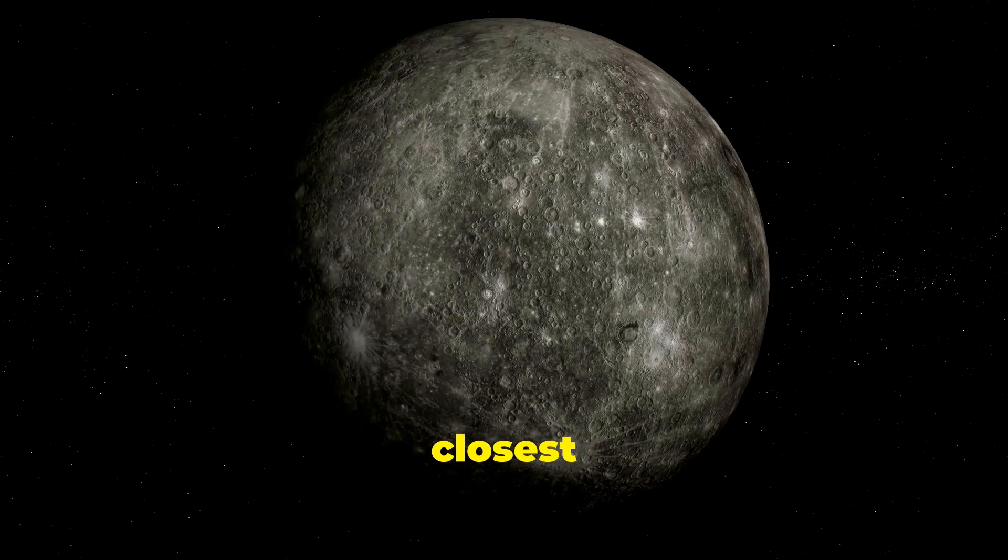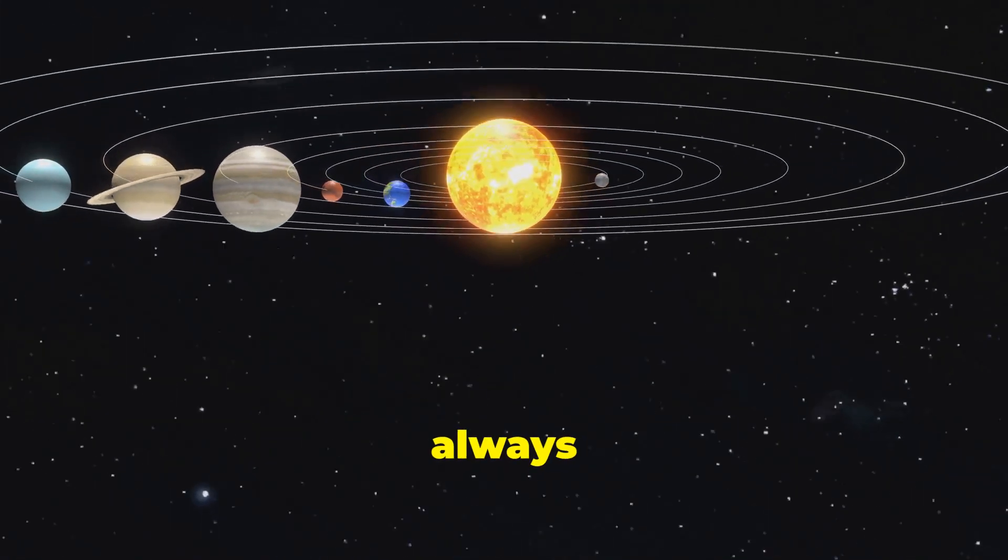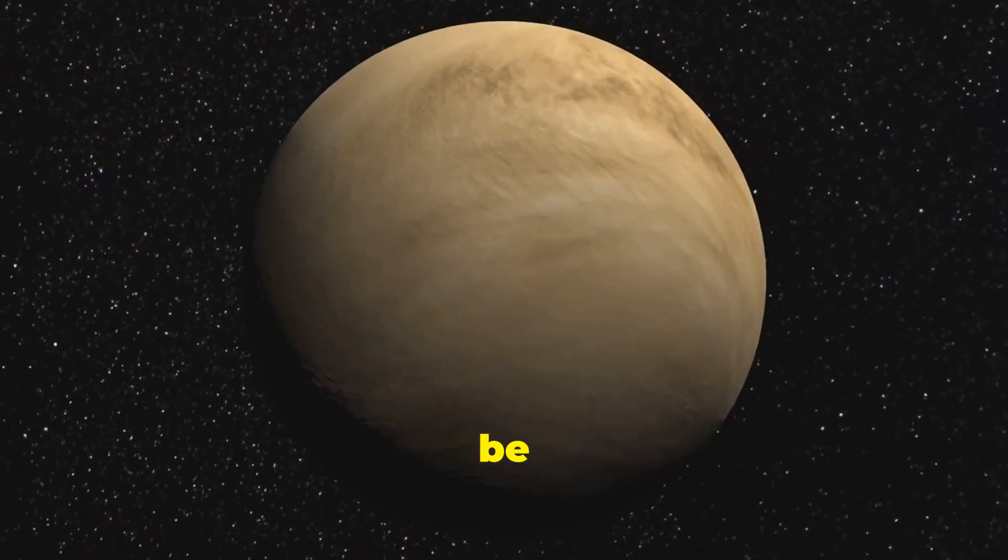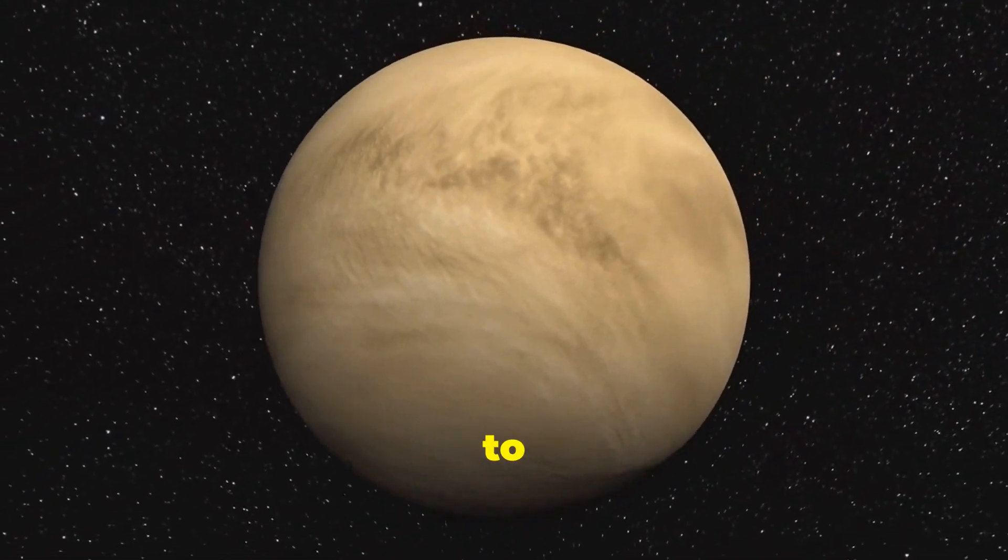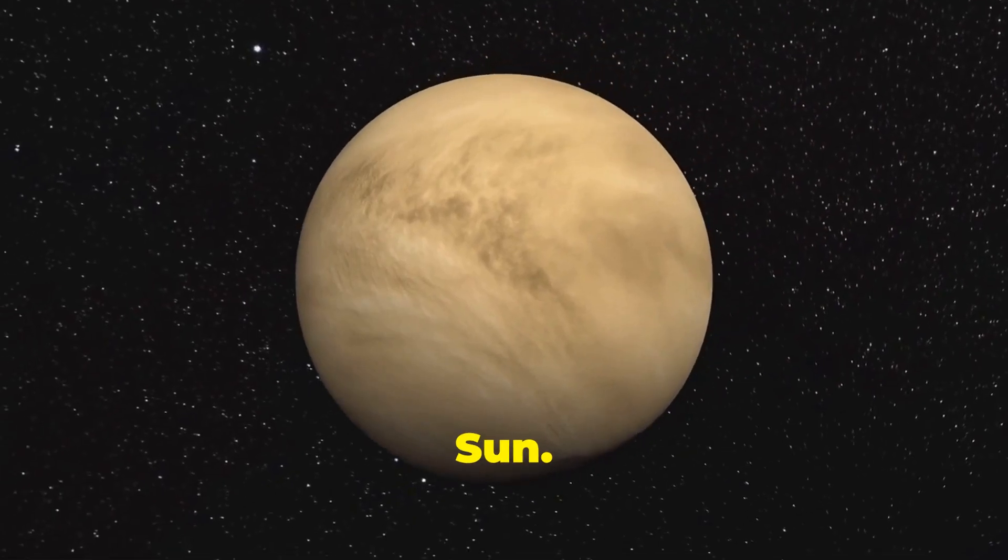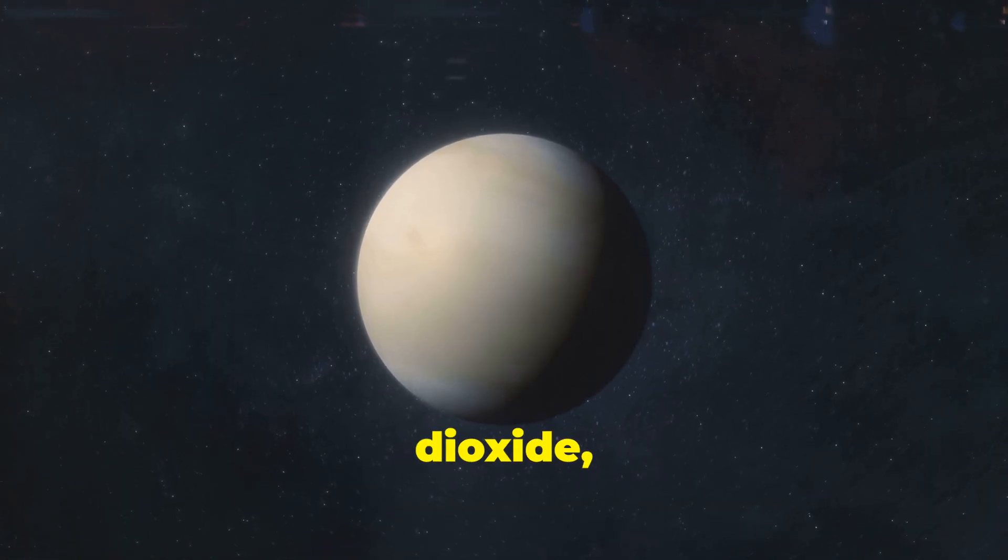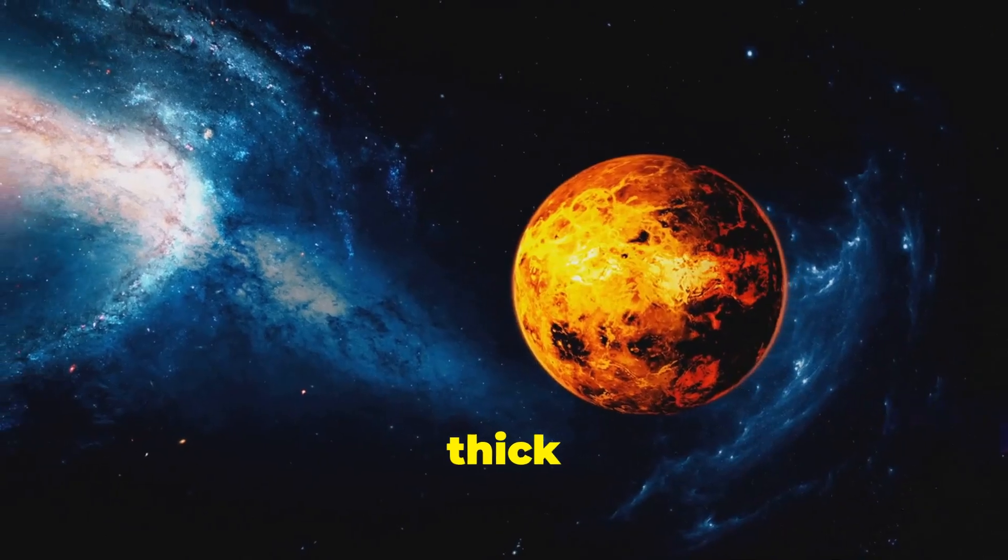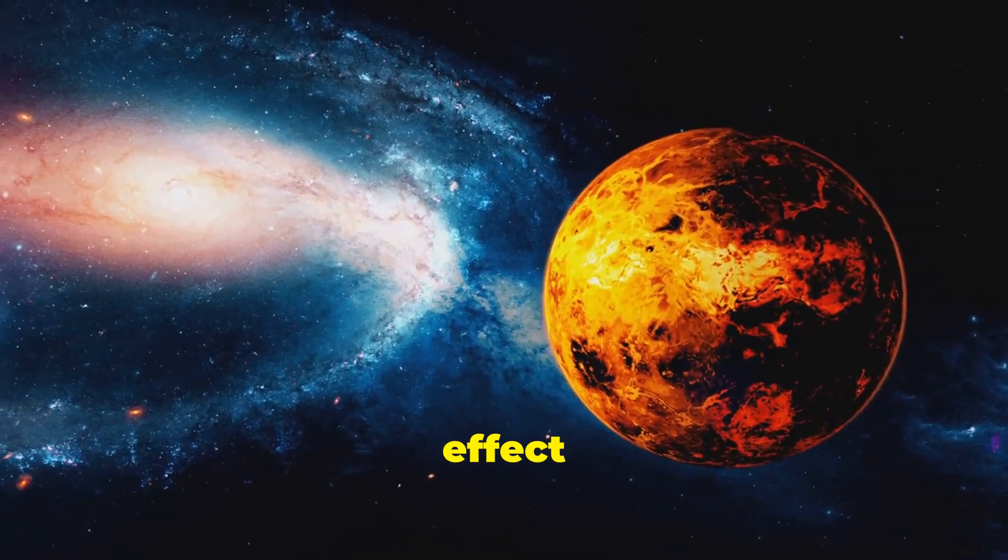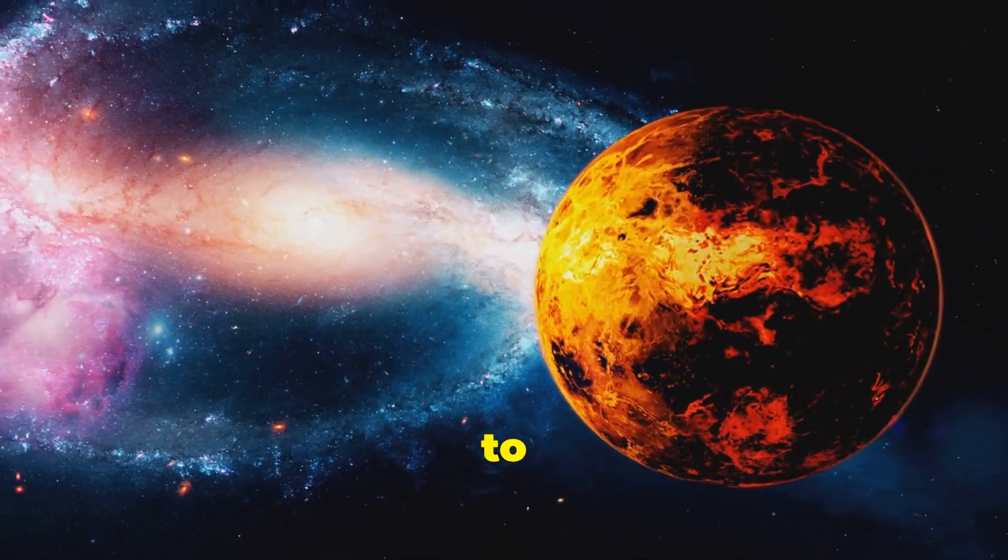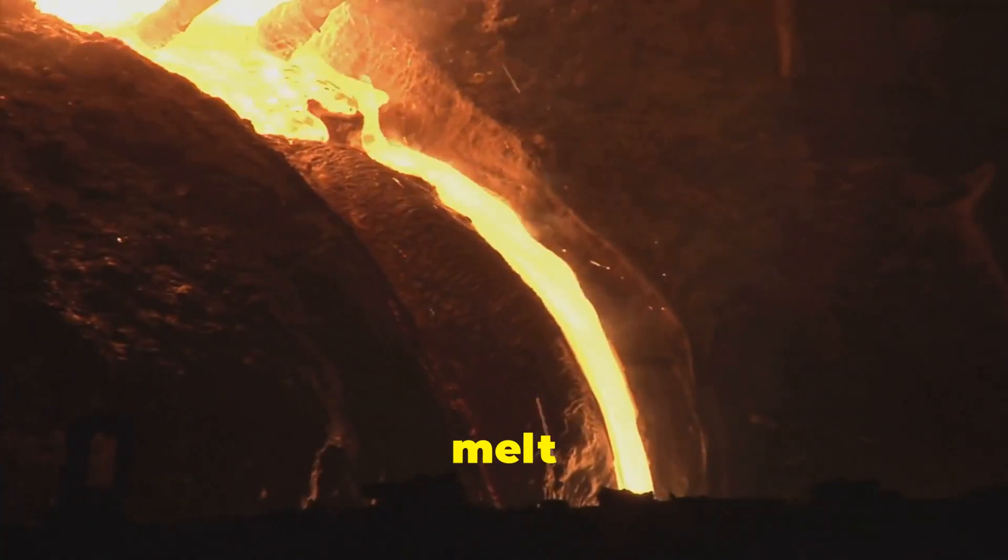You might think that the planet closest to the sun would be the hottest, right? Well, in our solar system that's not always the case. While Mercury might be the closest planet to our star, the title of hottest planet goes to Venus, the second planet from the sun. Venus has a super dense atmosphere composed mainly of carbon dioxide, a potent greenhouse gas. This thick atmosphere traps heat from the sun, creating a runaway greenhouse effect that sends surface temperatures soaring to an average of 867 degrees Fahrenheit. That's hot enough to melt lead.